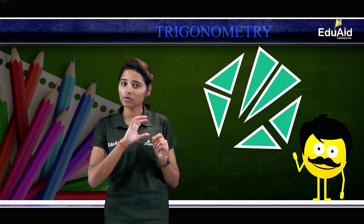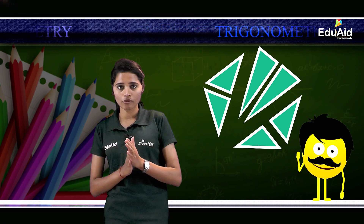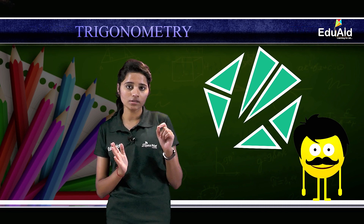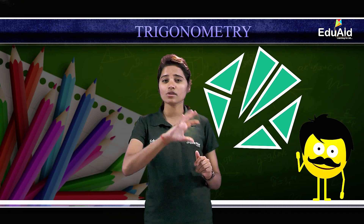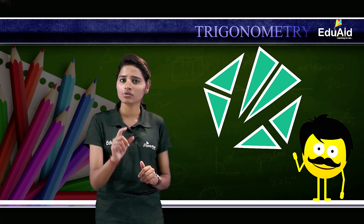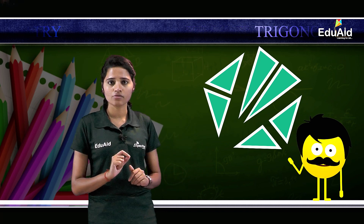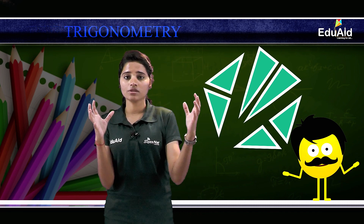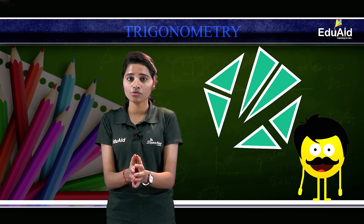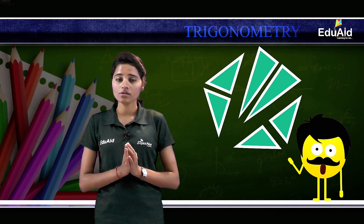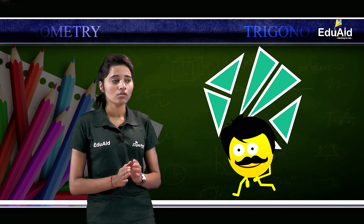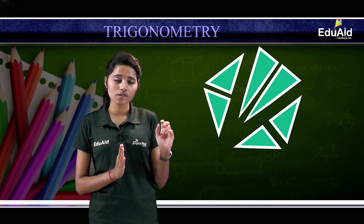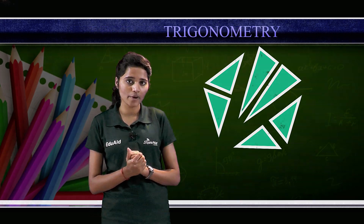Basically, be it a polygon or be it any other type of triangles, the ultimate small structure that we obtain is the right angle triangle. That's the reason instead of going into the complex structures, we refer to the simple right angle triangle, because those big structures — polygons and other types of triangles — can be broken down and reduced to a right angled triangle. Thus we see how this easy technique will help us to find out different parameters.